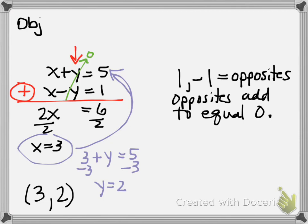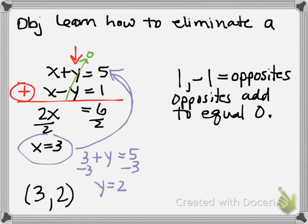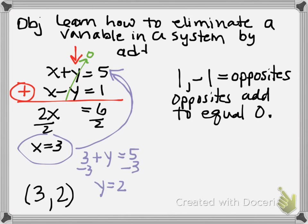This particular strategy works only when you have a pair of opposites in your two equations. So our objective today is to learn how to eliminate a variable in a system by adding. There's going to be a group of questions set up exactly for this process where you look and say, there's a pair of opposites — if I add the two equations they're going to eliminate. Tonight that's all we're going to focus on.